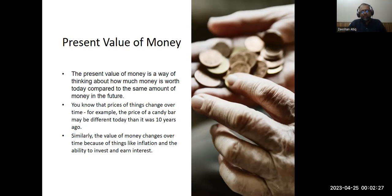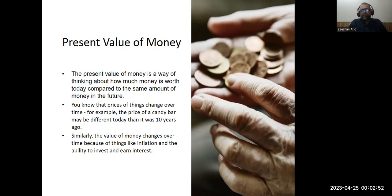For a formal definition, the present value of money is a way of thinking about how much money is worth today compared to the same amount of money in the future. For example, if you are investing $100 today and you get a promise of $110 in the future, you will be trying to see how much that $110 is worth today. That is what the present value of money is all about.